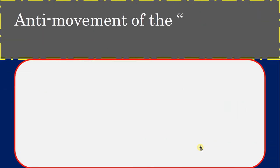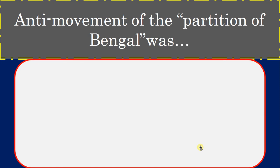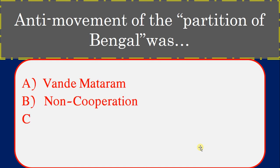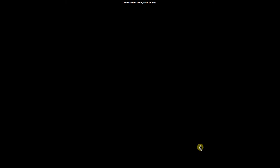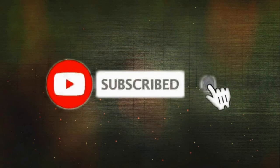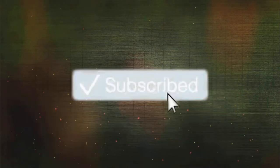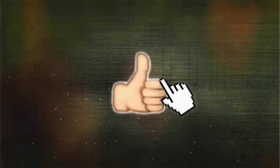The anti-movement against the Partition of Bengal was known as which movement? Options: One Day Matter movement, Non-cooperation movement, Civil Disobedience movement, Fit India movement. Correct answer: One Day Matter movement.